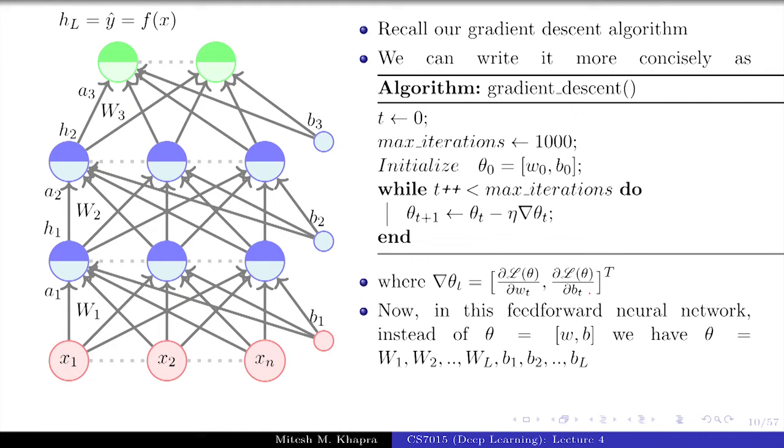Now in this feedforward neural network, instead of theta equal to w comma b, what do we have? Theta is equal to many parameters. So what would grad of theta t now be? Partial derivatives with respect to all the weights.